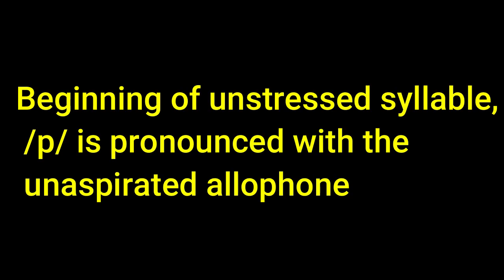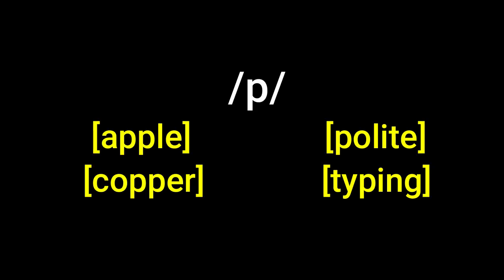On the other hand, the beginning of an unstressed syllable is pronounced with the unaspirated aliphone. Say for example, apple — not apple — polite — not polite — copper — not copper — piping — not piping.